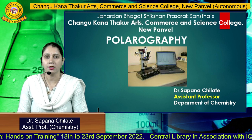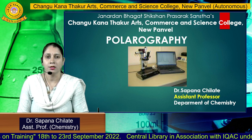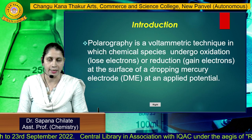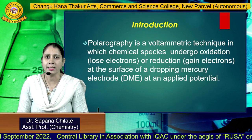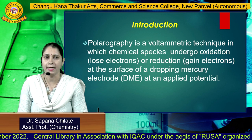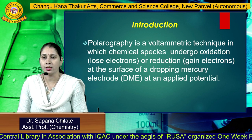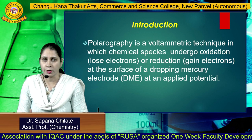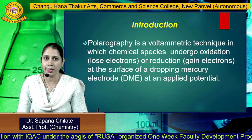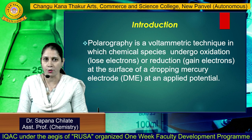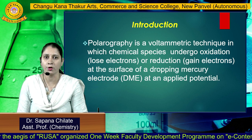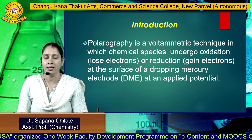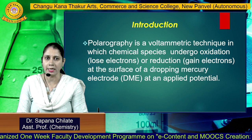In today's lecture, we are going to study the technique of polarography in detail. What is exactly the polarographic technique? It is basically a voltammetric technique in which chemical species can undergo oxidation by losing electrons or can undergo reduction by accepting electrons. This occurs on the surface of the dropping mercury electrode at an applied potential. The potential applied ranges from 0 to minus 3 volts.